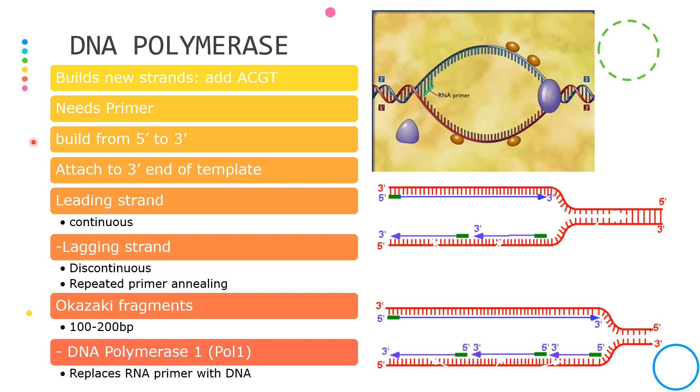Another concern of the DNA polymerase is that it can only build from the 5 prime to 3 prime direction. It cannot build from 3 prime to 5 prime.